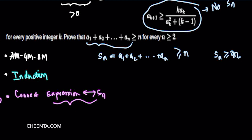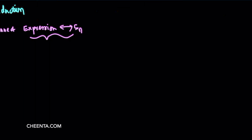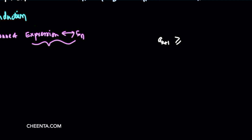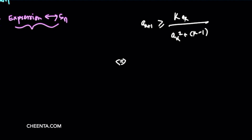We'll focus initially on this very important step of connecting the expression. Let's try to simplify the inequality expression. It tells us that a_{k+1} is actually greater than or equal to k·a_k / (a_k² + k − 1). There's nothing immediately interesting about this expression, so let's try to explore and play with the algebra. The first step is to find some pattern — something that is not changing, which we call an invariant. That's where the essential idea lies.